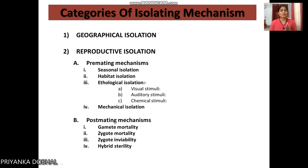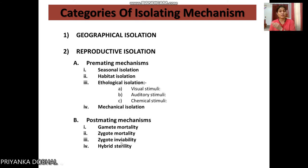There is another type called the post-mating mechanism, which is also a form of reproductive isolation. The post-mating mechanism includes gamete mortality — when gametes die — zygote mortality, and zygote inviability, meaning the zygote is not able to survive.